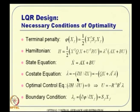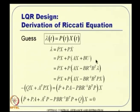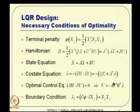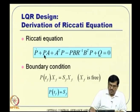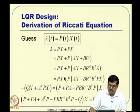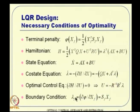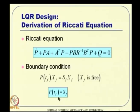Differentiating lambda = PX and substituting the state, costate, and optimal control equations, then collecting terms and noting the expression must hold for all X, the coefficient of X must be zero. This leads to the Riccati differential equation — a matrix differential equation with boundary condition P(T_f) = S_f. We back-propagate from T_f to T_0 to obtain P(t) for all t in [T_0, T_f].